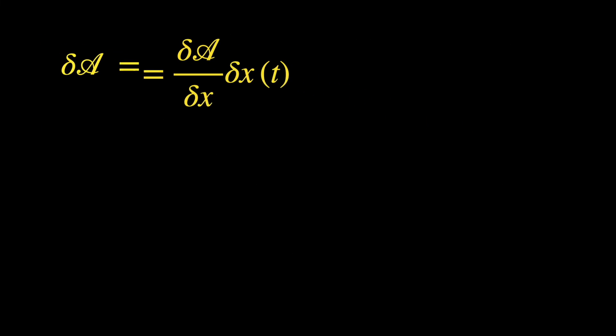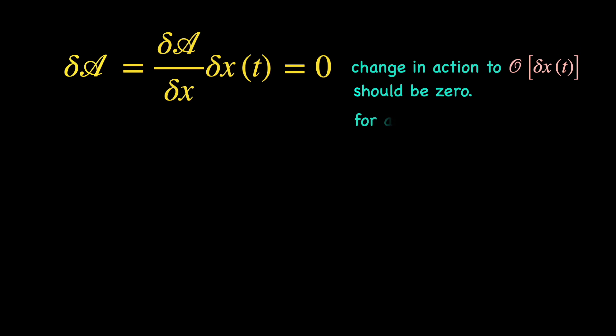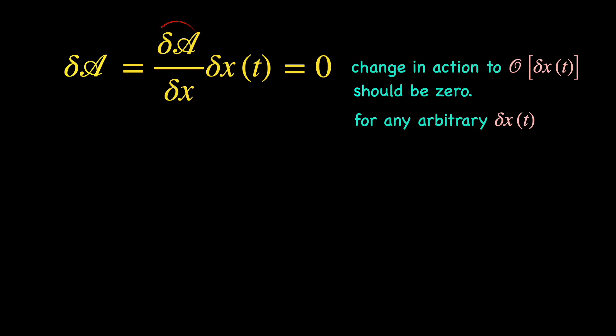Once we have such an expression, we apply the action principle and demand that for x(t) to be the correct path, its infinitesimal variation delta x(t) should not change the value of the action significantly. So delta A calculated up to the first order in the delta x(t) must be zero for any arbitrary delta x(t). That is only possible if the factor in front of delta x(t) equals zero on its own.